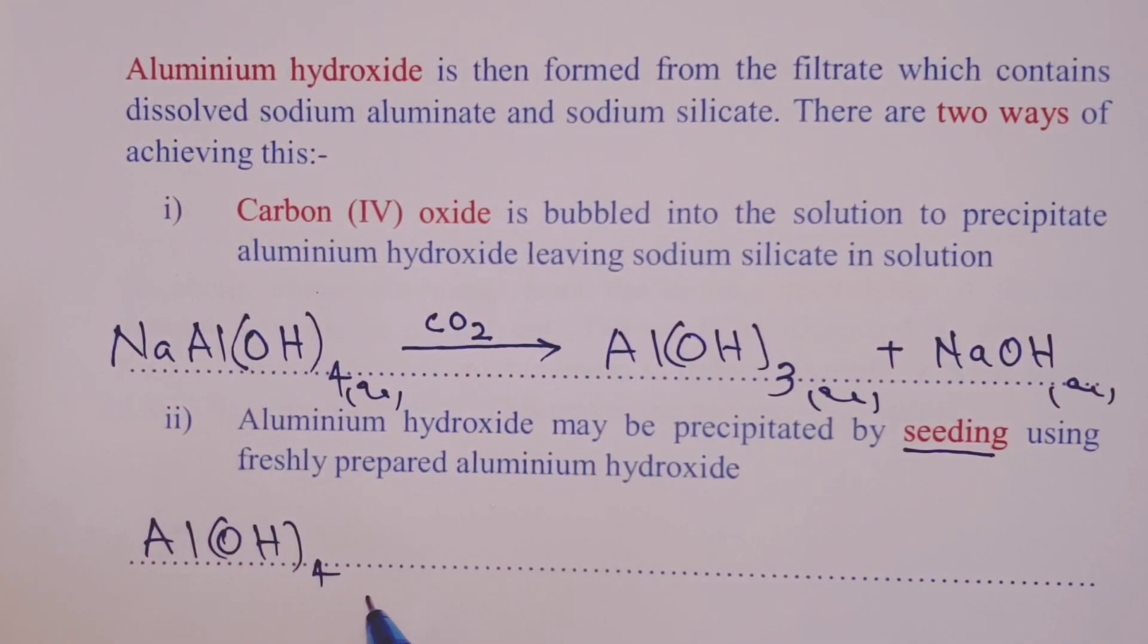The second method is to precipitate aluminum hydroxide through seeding, where we use freshly prepared aluminum hydroxide. So the equation will be as follows: we introduce freshly prepared aluminum hydroxide. This procedure is called seeding. We shall have aluminum hydroxide coming out and of course some hydroxide ions as well.